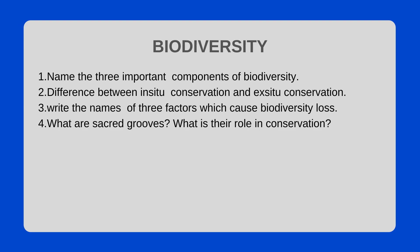Biodiversity: Name the three important components of biodiversity. Differentiate between in-situ conservation and ex-situ conservation. Write the names of three factors which cause biodiversity loss. What are sacred groves and what is their role in conservation?